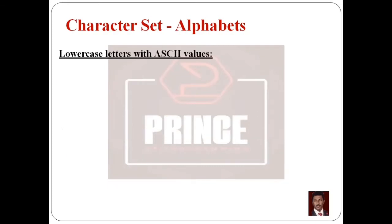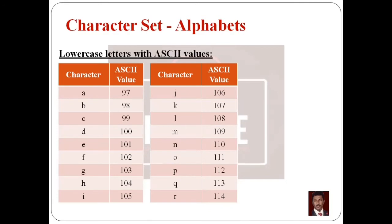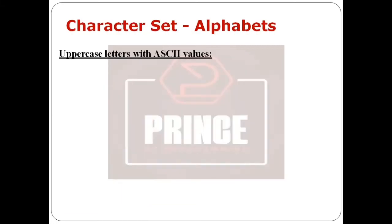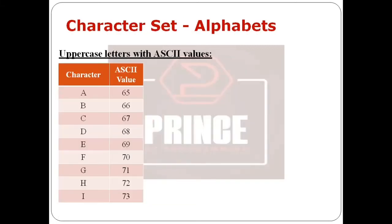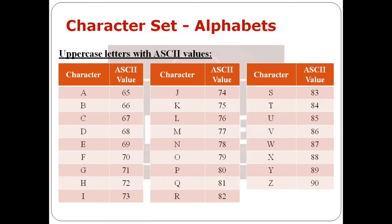These are the lowercase letters and their ASCII values. For small a, the ASCII value is 97. For small b, the ASCII value is 98. Similarly, for small z, the ASCII value is 122. These are the uppercase letters and their ASCII values. For capital A, the ASCII value is 65. For capital B, the ASCII value is 66. Similarly, for capital Z, the ASCII value is 90.